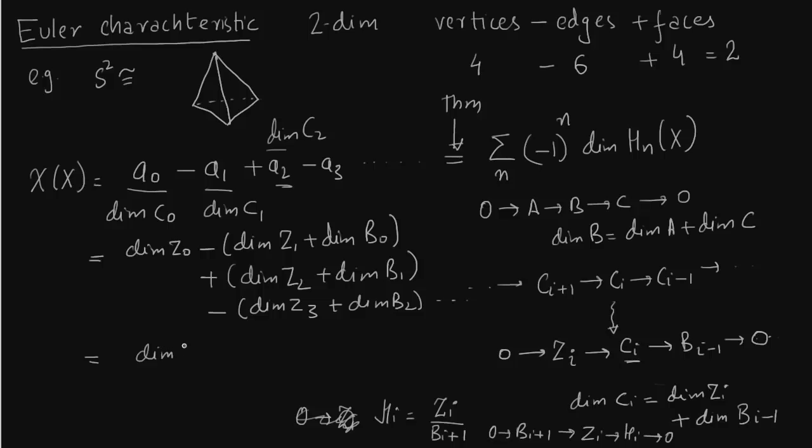Now I'm just going to rearrange the terms. So dimension of Z₀ minus dimension of B₀. Now you can see dimension of Z₀ minus dimension of B₀ is nothing but dimension of H₀. And so on, Z₁ minus dimension of B₁. So dimension of Z₂ minus dimension of B₂. So this is dimension of H₀ then minus dimension of H₁ plus dimension of H₂ and so on. And that gives us the required theorem.